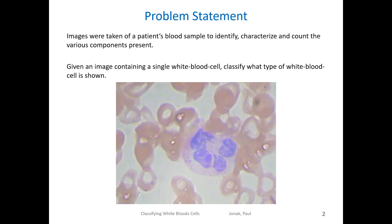Another way we could approach this is by identifying the class of white blood cells present. Each class has specialized roles as part of your immune system. Therefore, understanding which cell types are over or underrepresented could provide crucial diagnostic information. For the task at hand, we assume a blood sample has been taken and we now have images of the white blood cells within that sample. The goal is to identify which class of white blood cells is present for each image.